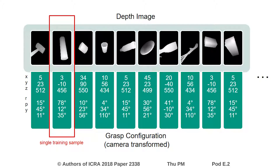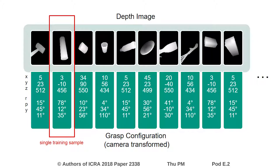Each sample contains a full grasp configuration, which in the special case of the robot shown earlier in the video can be described by XYZ and roll, pitch, yaw. Please note that for a different robot, this configuration can differ and is especially not limited to 6 dimensions.